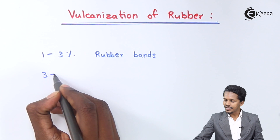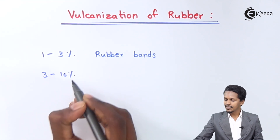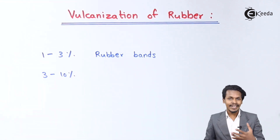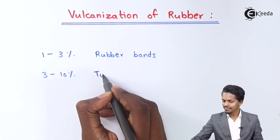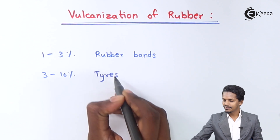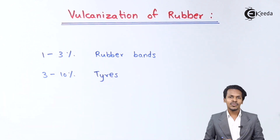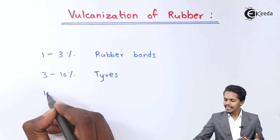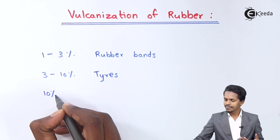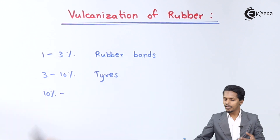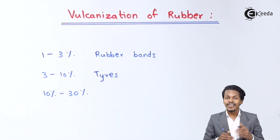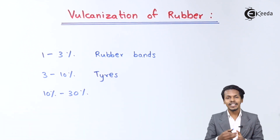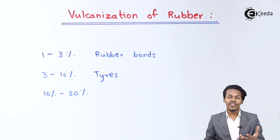Talking about the other advantage: when 3 to 10 percent of sulfur is added in a rubber, that rubber after vulcanization is used in tires. And the next one — it has been found that 10 to 30 percent of sulfur, if added in a rubber during the vulcanization process, will make the rubber very much harder.